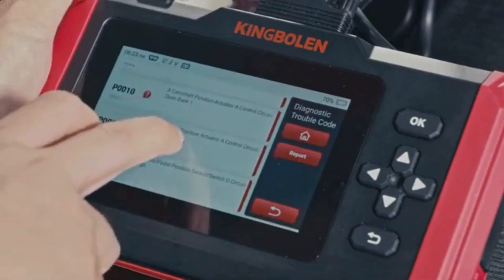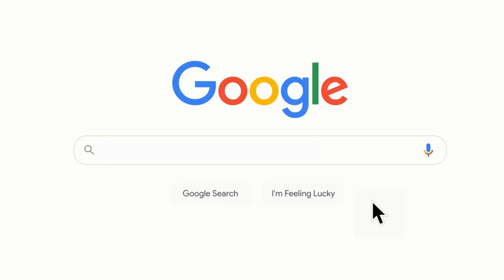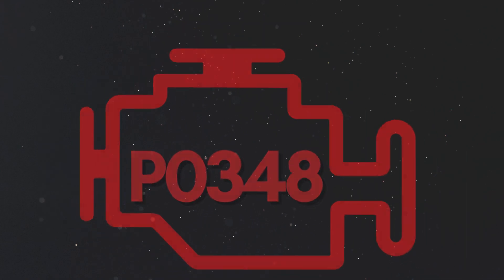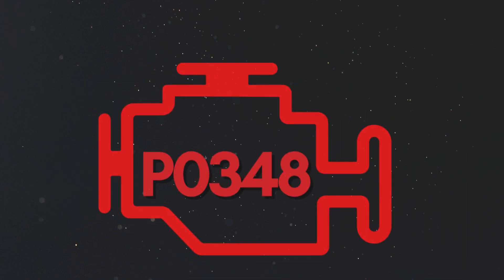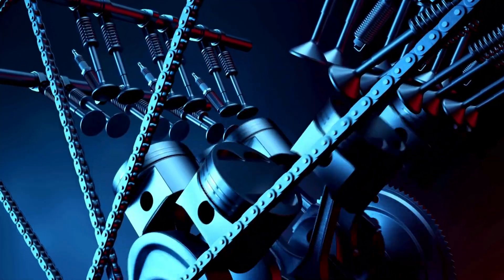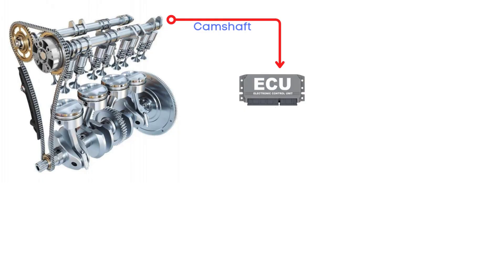If you want to read more about any other OBD2 codes, you can visit our website obdcode.org for a full list of codes and their meanings. Now let's learn why P0348 was triggered. The camshaft position sensor keeps track of the exact position of the camshaft as it rotates and constantly sends this signal to the ECU. The ECU doesn't just rely on this one signal — it also takes in information from the crankshaft position sensor, engine speed, and engine load.